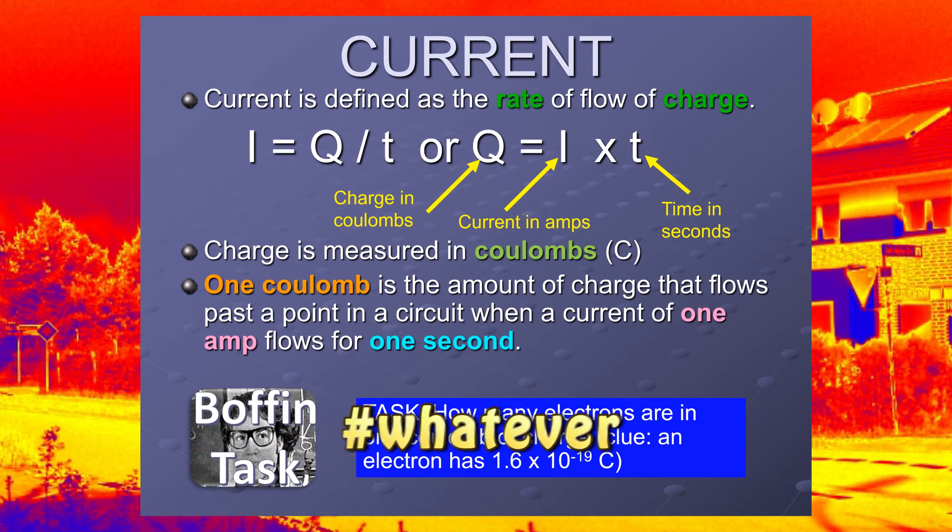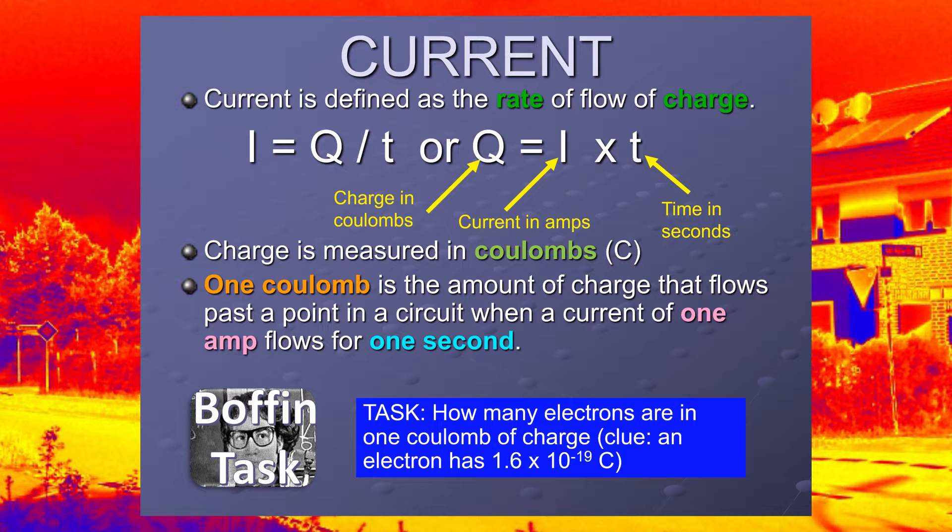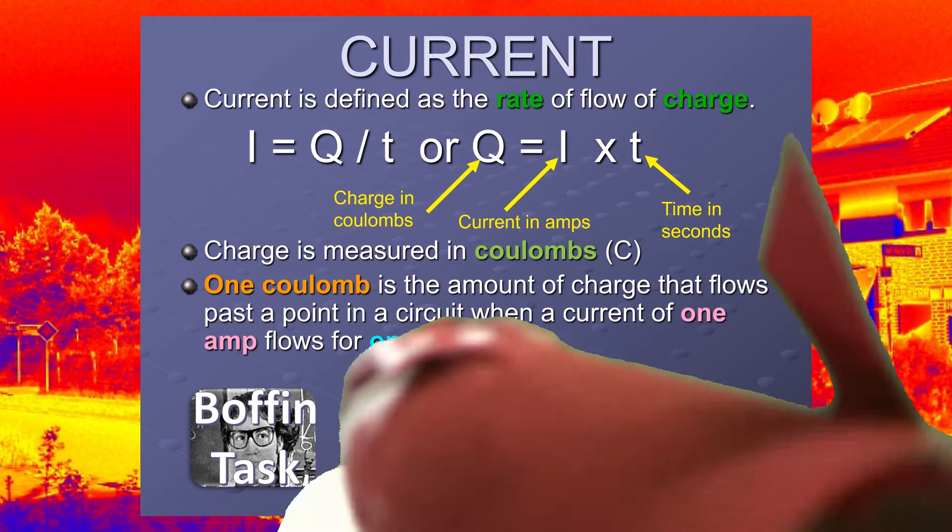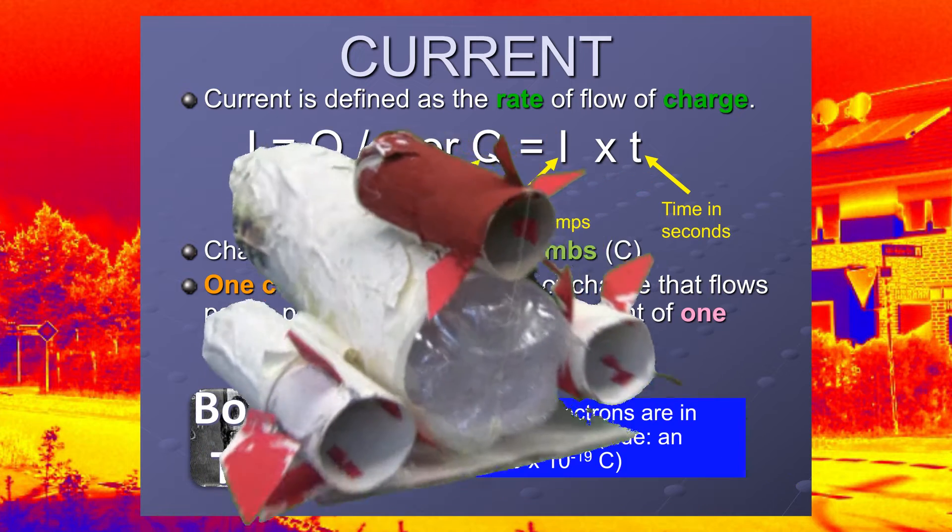That's how the scientists defined it. They didn't know what charge was back in the day, and it wasn't until 1897 that J.J. Thompson discovered the electrons, actually worked out that it was actually electrons moving around the wires in the circuit.